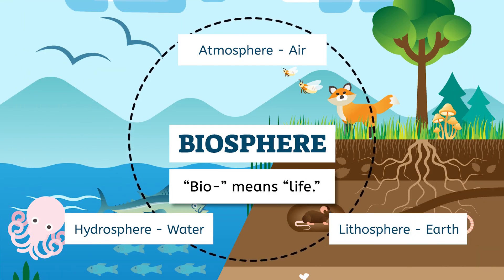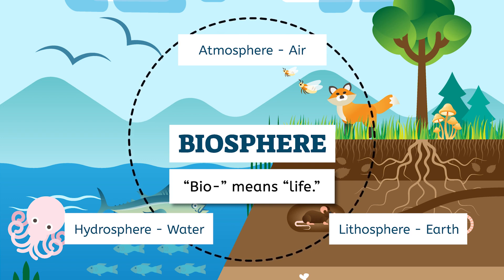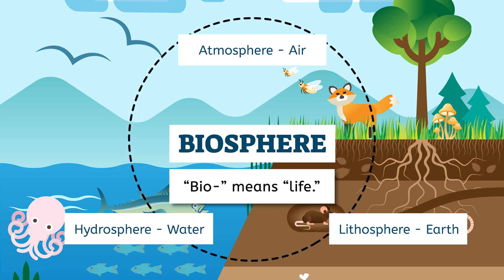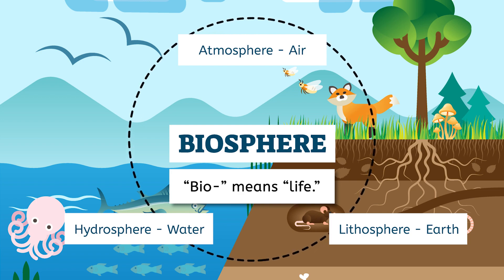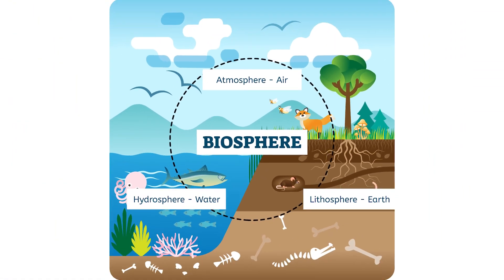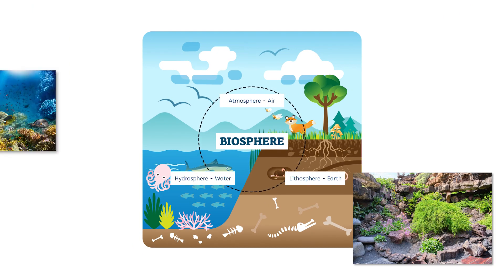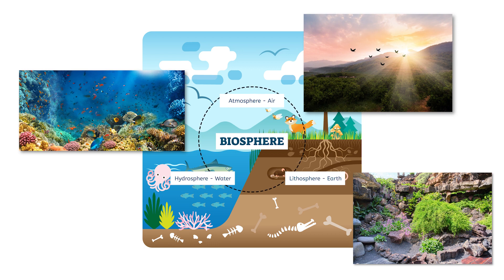The prefix 'bio' means life, so it is fitting that the biosphere includes all of the areas of the Earth that support and contain living organisms. What is different about the biosphere compared to the other spheres we have studied in this unit is that the biosphere includes parts of the geosphere, hydrosphere, and atmosphere. The biosphere includes the lithosphere, the entire hydrosphere, and the lower layers of the atmosphere. These three systems work together to help support all living organisms of the biosphere.